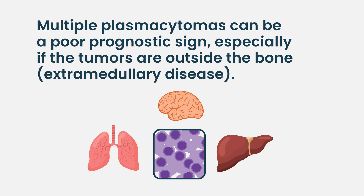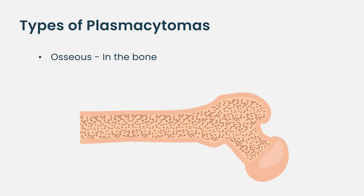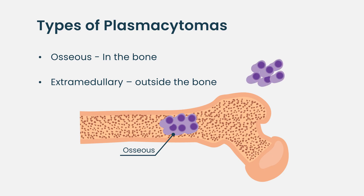A solitary plasmacytoma is typically found on a scan when someone has symptoms — most commonly in the spine in my experience. There are two types when discussing plasmacytomas: osseous plasmacytomas, which are in the bone, and extramedullary plasmacytomas, which are outside the bone. Extramedullary plasmacytomas are much less common; most plasmacytomas are osseous and most of those are in the spine.